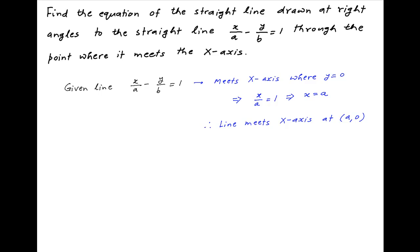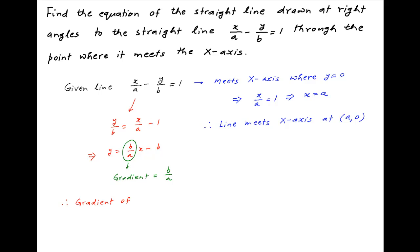Going back to the equation of the line, which can be expressed as y upon b is equal to x upon a minus 1. Multiplying both sides by b, we get y is equal to b upon a times x minus b. Therefore the gradient of this line is equal to the coefficient of x, which is b upon a. Therefore the gradient of the line which is perpendicular to this line is equal to minus 1 divided by b upon a, which is equal to minus a upon b.